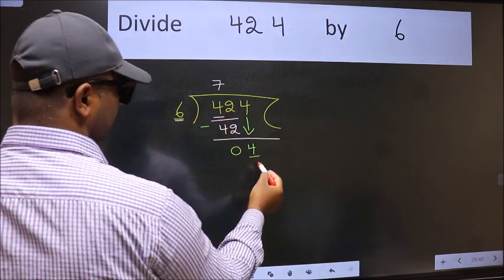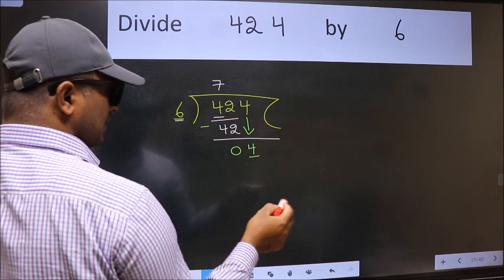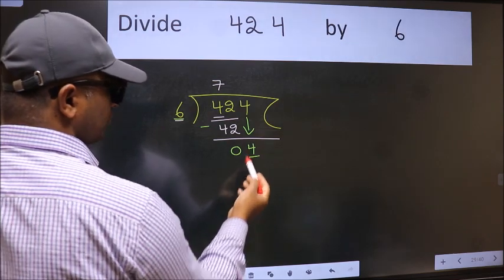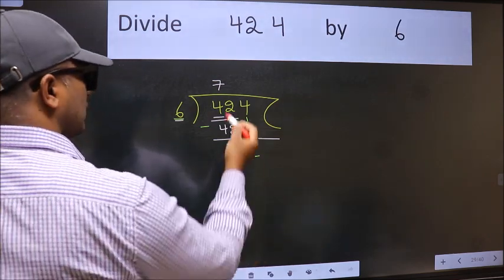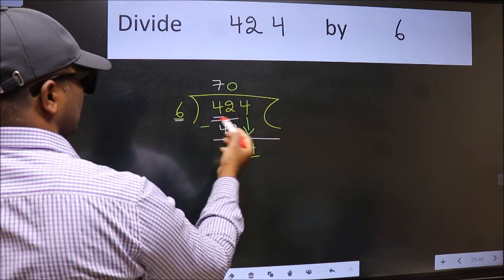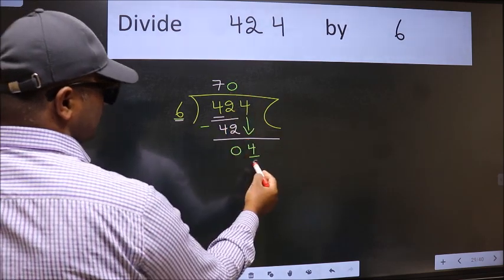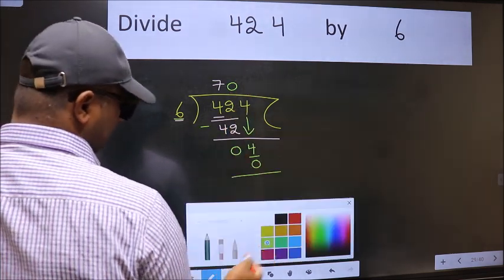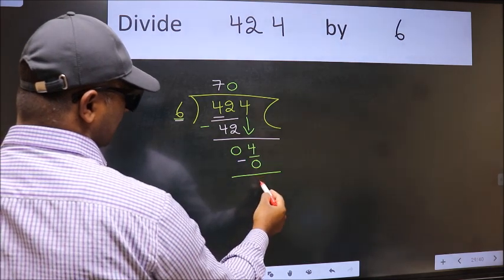If I take 1, we will get 6. But 6 is larger than 4. So what we do is, we take 0. So 6 into 0 is 0. Now we subtract. We get 4 here.